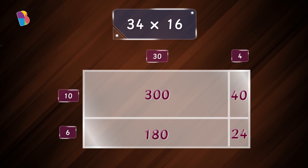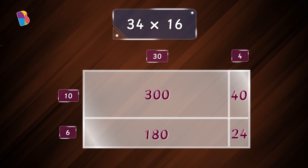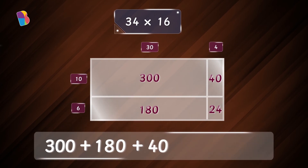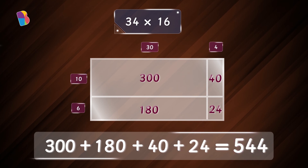Now, all that is left is to add the areas of all the rectangles. To do that, we need to add three hundred, one hundred eighty, forty, and twenty-four. Three hundred plus one hundred eighty plus forty plus twenty-four gives five hundred forty-four.